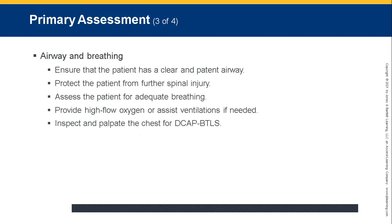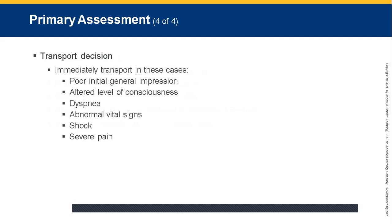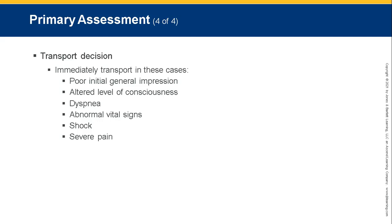Airway and breathing: ensure the patient has a clear and patent airway — if the patient doesn't have an airway, nothing else matters. Protect the patient from further spinal injury. Assess for adequate breathing and provide high-flow oxygen or assist ventilations if needed. Inspect and palpate the chest for DCAP-BTLS. After completing your ABCs and assessing LOC, determine the patient's GCS, whether a rapid scan or focused assessment is needed, and whether it's a load-and-go or stay-and-play situation. Transport immediately for altered level of consciousness, dyspnea, abnormal vital signs, signs of shock or hypoperfusion, or severe pain.